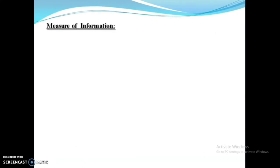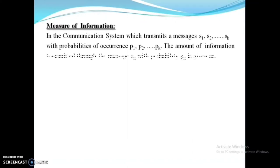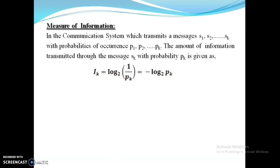Now we can see the measure of information. In a communication system which transmits messages S1, S2 up to SK with probabilities of occurrence P1, P2 up to PK, the amount of information transmitted through message SK with probability PK is: IK = log base 2 of (1/PK), which equals minus log base 2 of PK. The amount of information is related to the inverse of the probability of occurrence. Since information is converted to binary values, we use the logarithmic function with base 2.